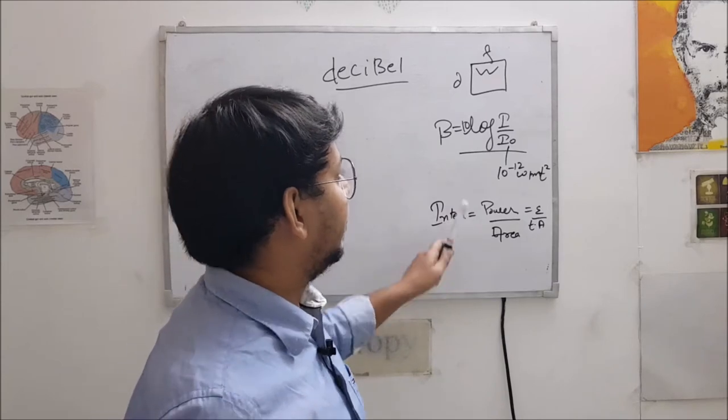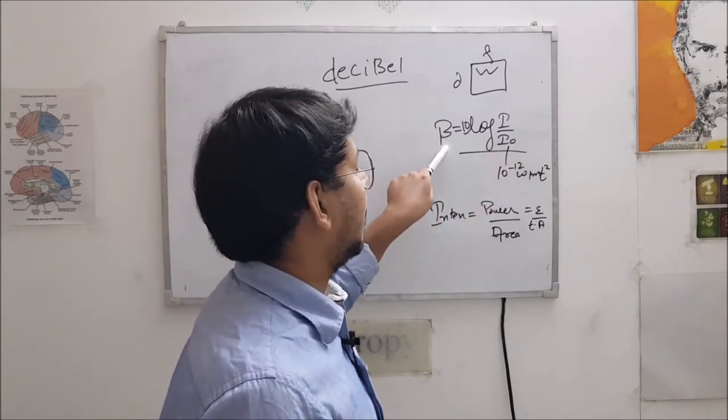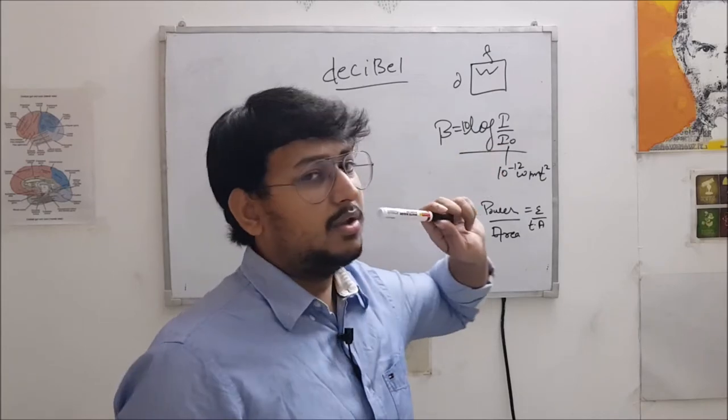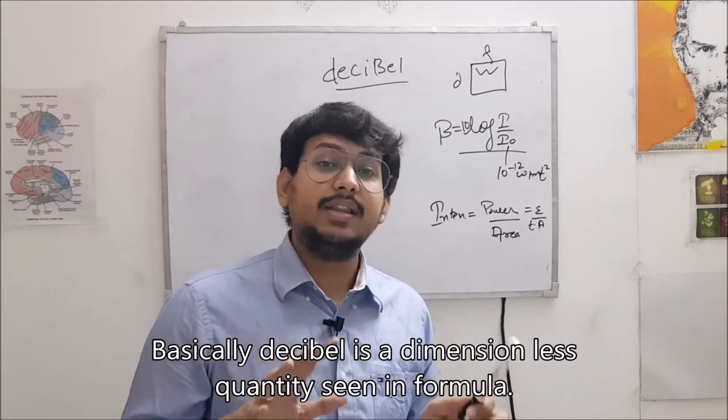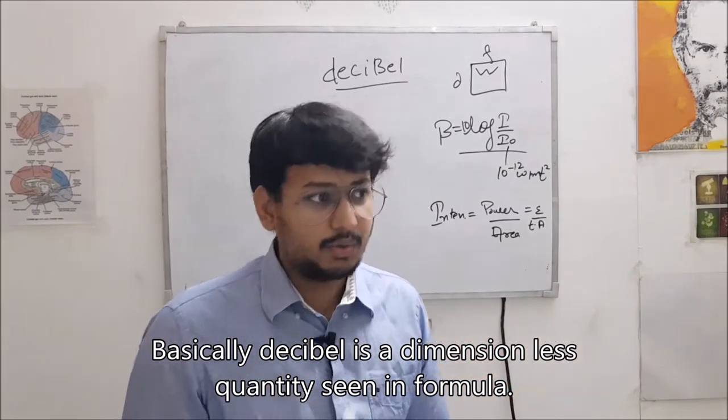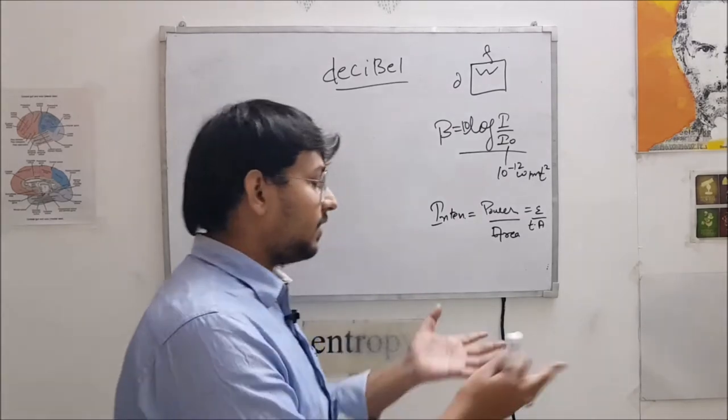So here we are taking intensity and here this beta decibel, how can it be intensity? So this is not intensity, basically this is a measurement of intensity level or sound intensity level. For example, you can say it's idea of loudness of any system.